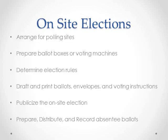Moving on to on-site elections. On-site elections come in two forms: ballot box and voting machine. Voting machine is not very common, but we'll cover it briefly just in case. The to-do list for a ballot box election is on page 39 of the Procedures Manual. The to-do list for a voting machine election is on page 53 of the Procedures Manual. For either, you will need to arrange for polling sites, prepare the ballot boxes or voting machines, draft various types of ballots, envelopes, and instructions, publicize the election, and handle absentee ballot requests. Keep in mind that even though you're not engaged in a mail ballot, you will need to be prepared to mail out and accept returns of a certain number of absentee ballots.